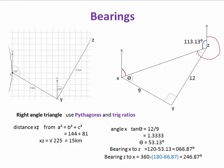We can redraw this as a right-angled triangle XYZ with legs of 9 kilometres and 12 kilometres. We find the distance X to Z using Pythagoras: 9 squared is 81, 12 squared is 144, and the square root of 225 is 15 kilometres. So the distance from X to Z is 15 kilometres.